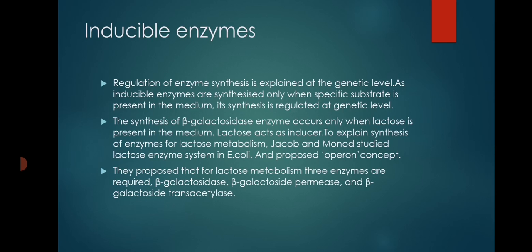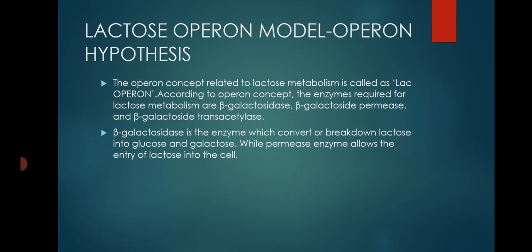The operon is a group of functionally related structural genes which function coordinately, and enzyme synthesis occurs only when lactose is present in the medium. In the lac operon model, three types of enzymes are required for lactose metabolism: beta-galactosidase, beta-galactoside permease, and beta-galactoside transacetylase.